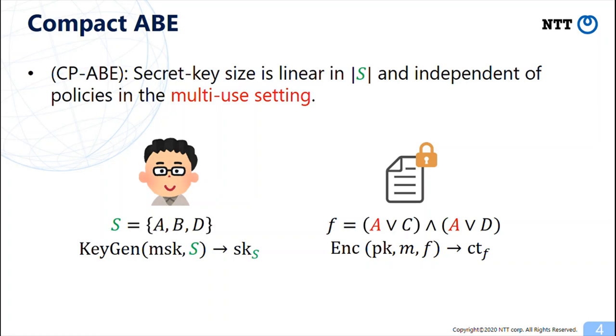In this case, the compactness implies that the ciphertext size is linear in the size of S. The multi-use setting means that we can use each attribute more than once in a policy. In this example formula F, attribute A is used twice and this is the multi-use of attributes.